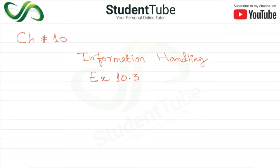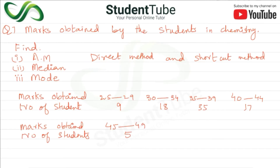Assalamualaikum, welcome to Student Tube. Today's lecture: Chapter 10, Information Handling, Exercise 10.3, Question 7. Marks obtained by students in Chemistry — find arithmetic mean by direct method and shortcut method, median, and mode. The data is grouped data where classes and number of students (frequency) are given.